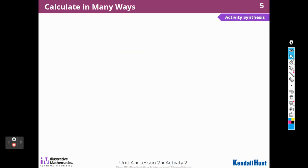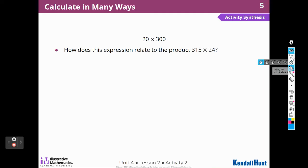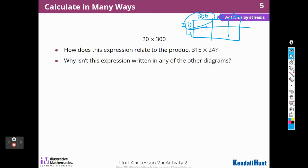20 times 300. How does this expression relate to 315 times 24? Well, that's easy to answer. It represents one of the products in the first diagram. In that first diagram, I had 20 and 4 here. And I had 300 at the top, and then 10, and then 5. So this represents one of the products that I had to do to find the answer to that problem. Why isn't this expression written in any of the diagrams? Because we broke them up. They're decomposed differently. I decomposed the 24 and the 315 for this diagram, and none of the other diagrams decomposed them. They decomposed them differently.